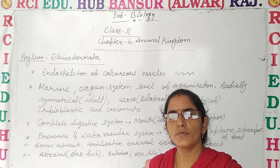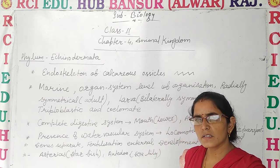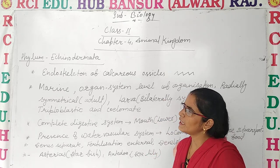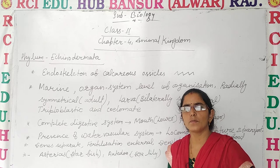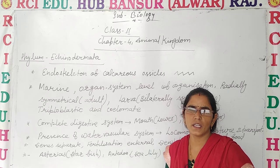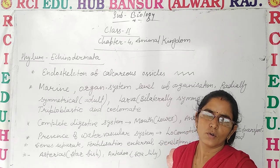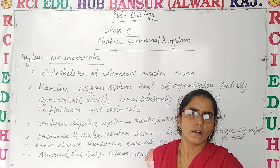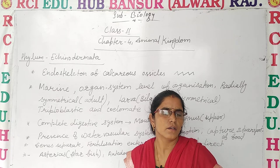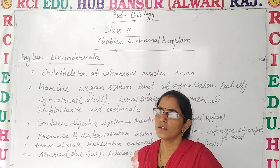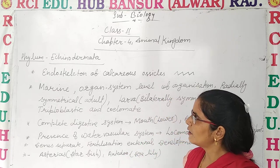So before this we discussed about so many phyla like Porifera, Cnidaria, Platyhelminthes, Annelida, Arthropoda, and Mollusca.